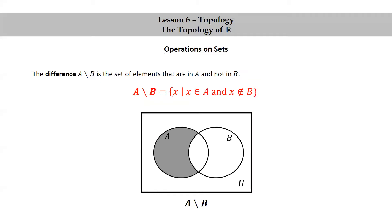Here's a Venn diagram representing the set theoretic difference A minus B. You can see we shade the portion of A that does not include B.